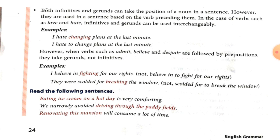If the verb is love or hate, we can use both infinitive or gerund. For example: I hate to change plans at the last minute. However, when verbs such as admit, believe, and despair are followed by a preposition, they take gerund but not infinitive. For example: I believe in fighting for our rights — here, 'to fight' is wrong.